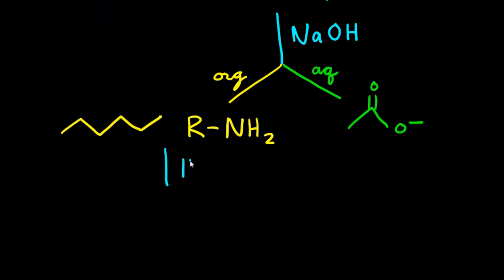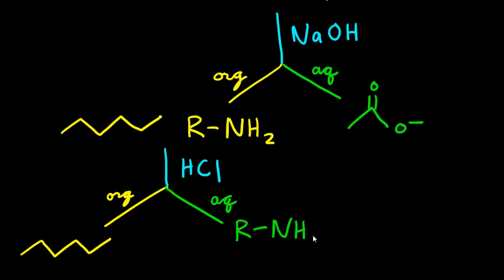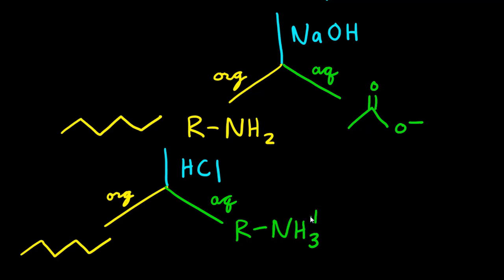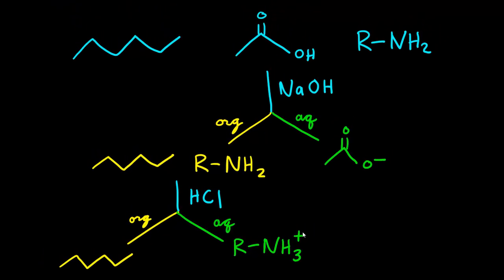now you would be able to add HCl to isolate your hexane from your protonated amine. And now you've just learned how to do acid-base extractions.